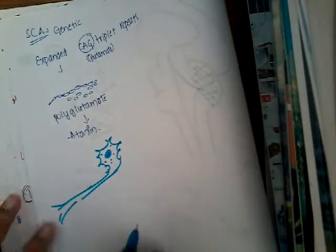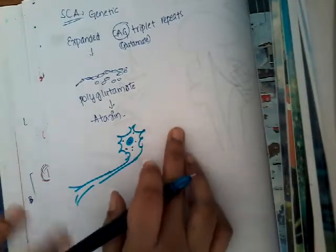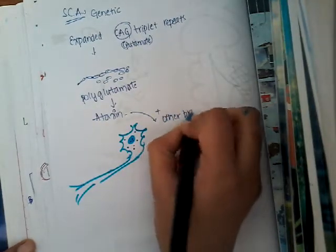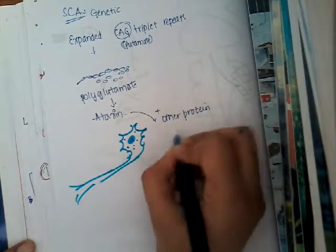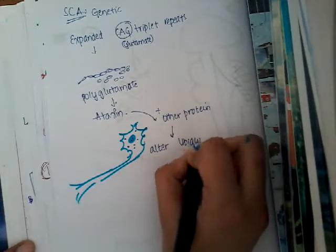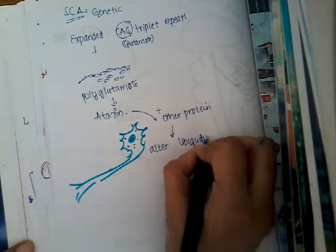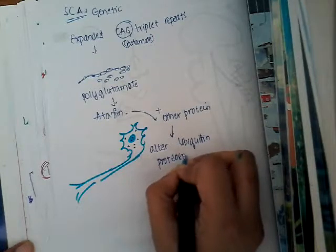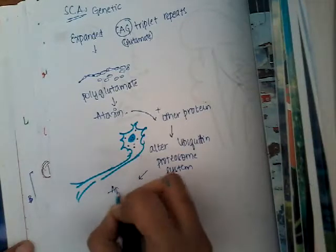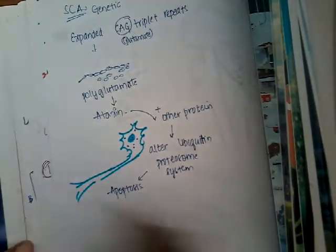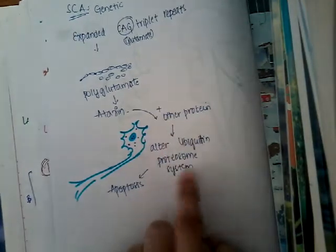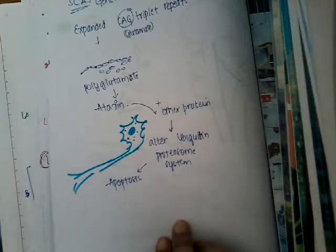This ataxin binds to other proteins, and after binding, it alters the ubiquitin proteasome system, thus causing apoptosis of neurons. It gets accumulated in these areas, attaches to other proteins, alters the ubiquitin proteasome system, and causes apoptosis.